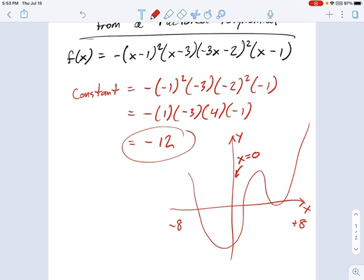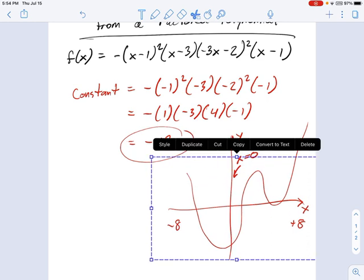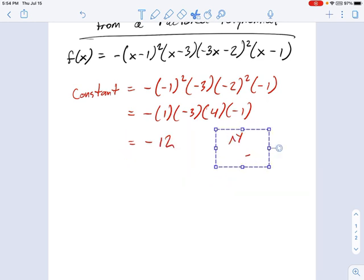So you take x equals 0 and plug it into that original equation. Well, look what happens when you do that. All these x's turn into 0s, and all you're left with is the numbers. It's the same idea we've been going over. This is how you find the constant term: you just multiply all the numbers together on the right.